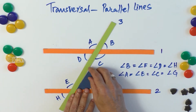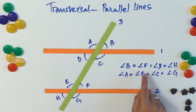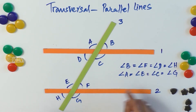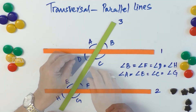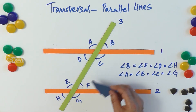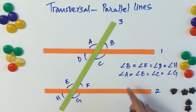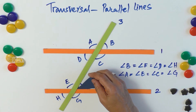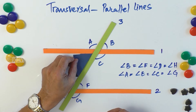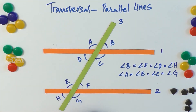Now let us look at angle F. Notice that angle F is also the alternate interior angle to angle D. In the case of parallel lines, in addition to corresponding angles being equal, we also get the property that alternate interior angles are equal.